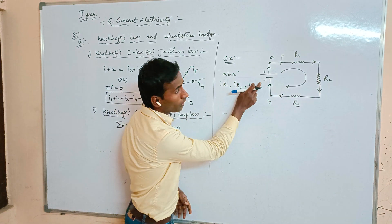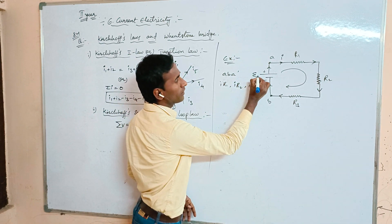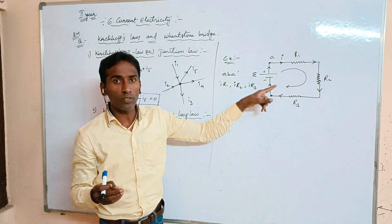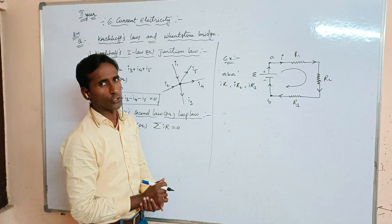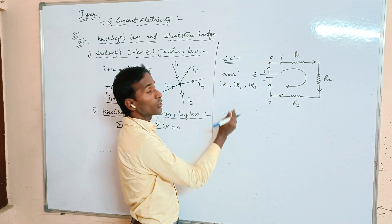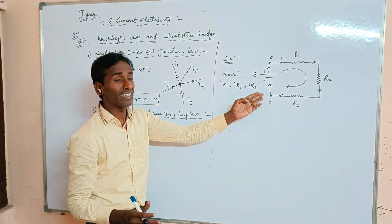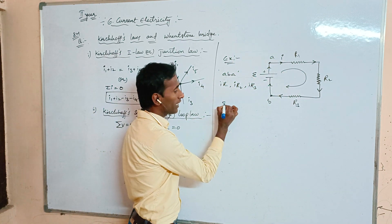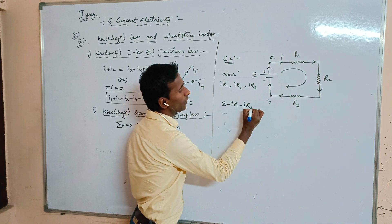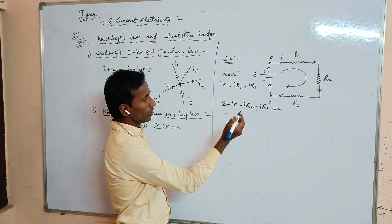The EMF of the cell, denoted as E, is taken as positive through the circuit. Applying Kirchhoff's Second Law, the total potential difference through any closed path equals zero: E - ir1 - ir2 - ir3 = 0.